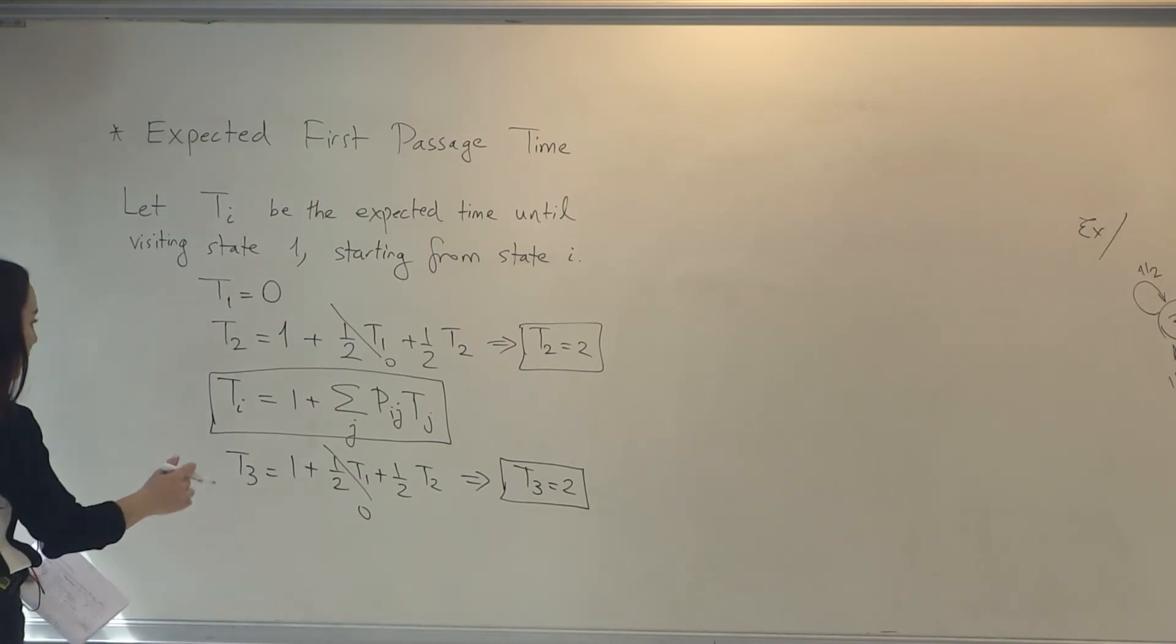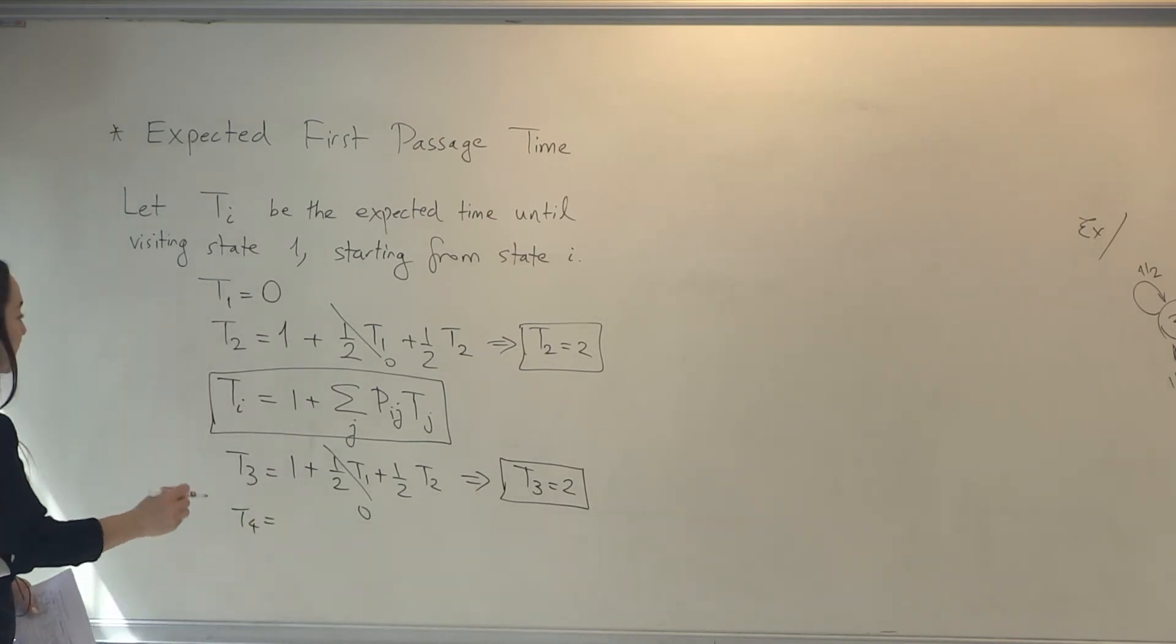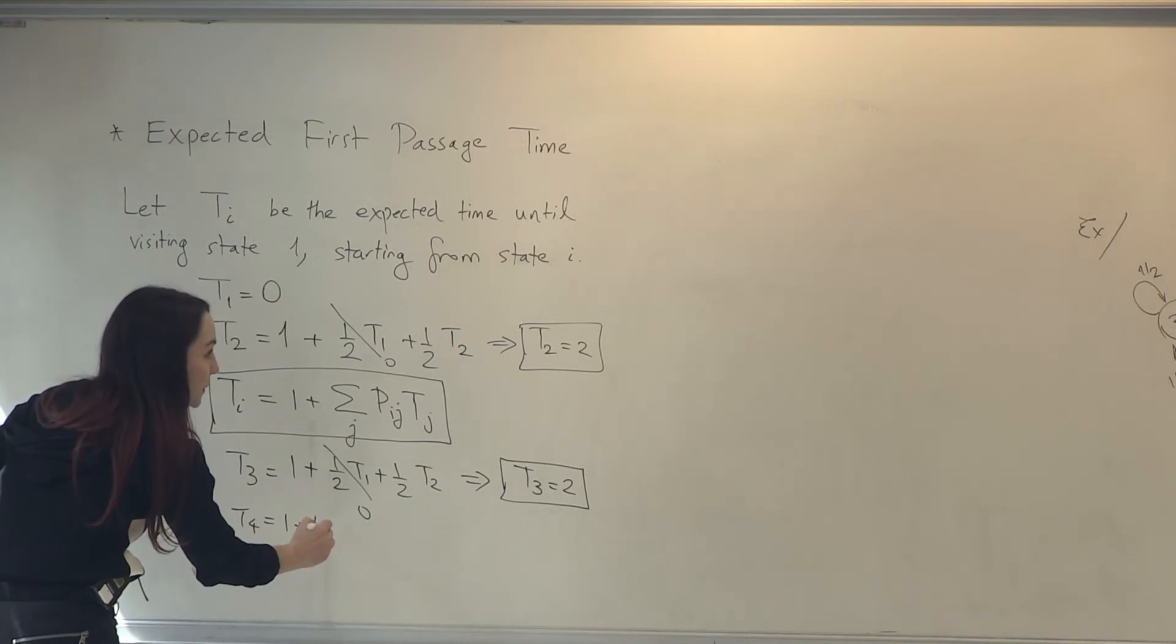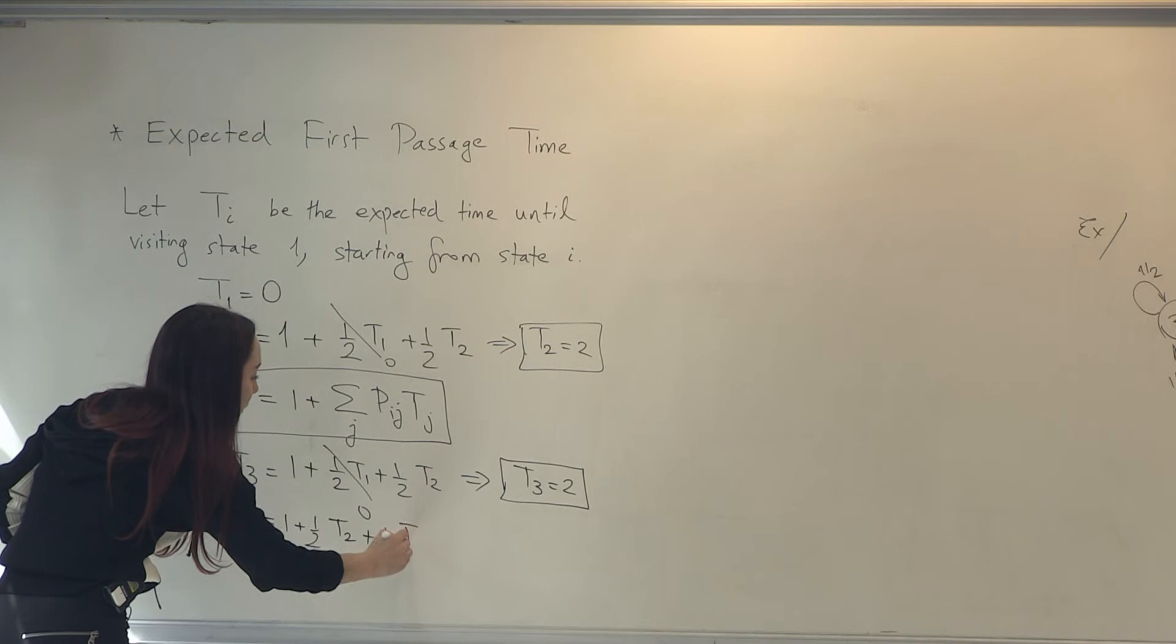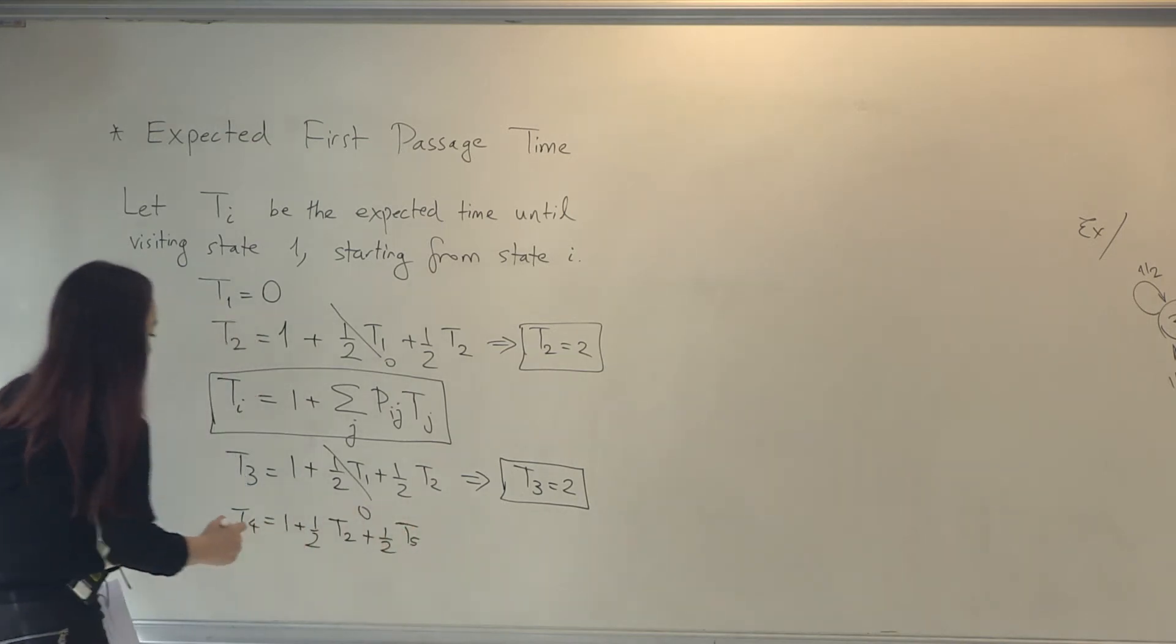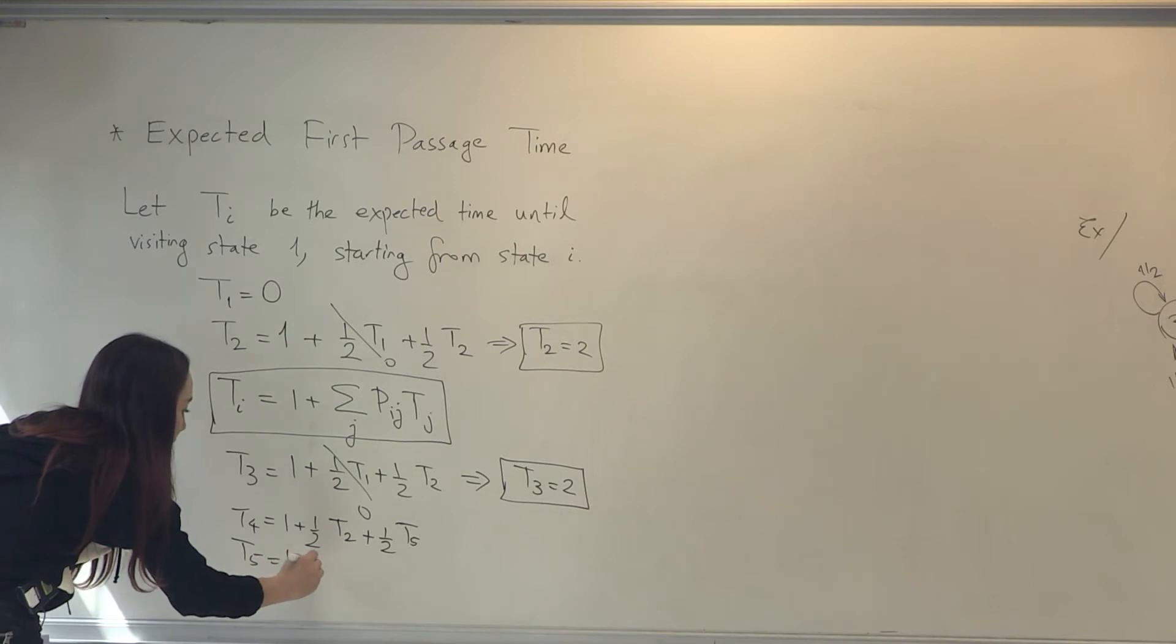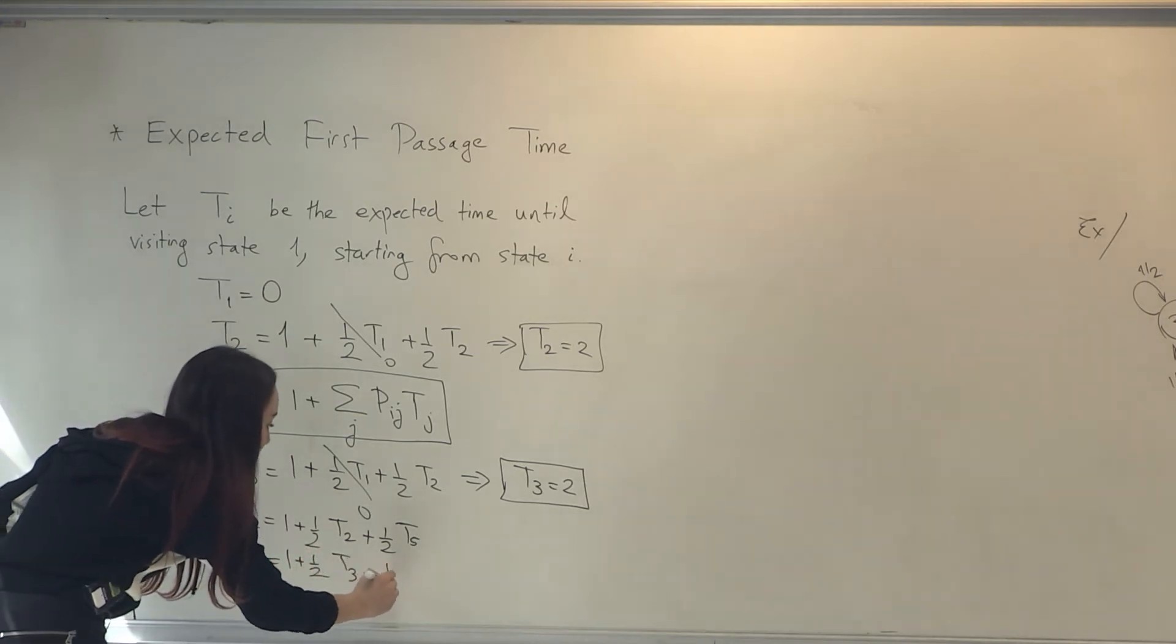Moreover, how about T4 and T5? I can write an equation for T4 that is 1 plus 1 half T2 plus 1 half T5. And for T5, it's similar. T5 is 1 plus 1 half T3 plus 1 half T4.